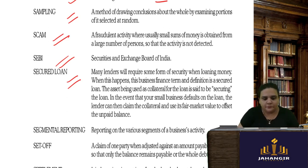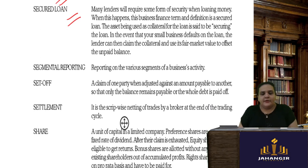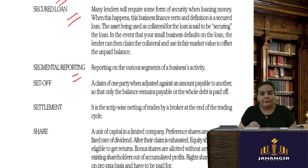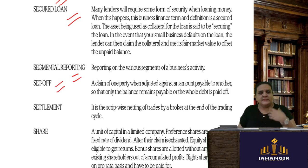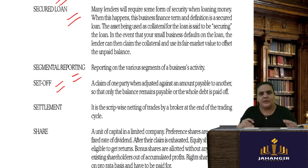A secured loan is one where security is kept for the loan being taken — for example, if you take a bank loan and keep your house as mortgage security, it is a secured loan. Segmental reporting: if a business has various segments — automobile, food products, garments — each segment must be reported separately. Set-off is when I make a claim against a defendant and the defendant also makes a counterclaim, and the remaining net amount has to be paid — this also happens in tax settlement.